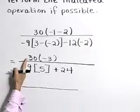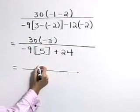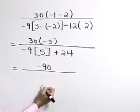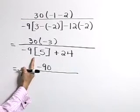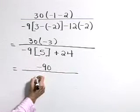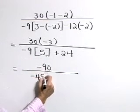Back to the numerator, 30 times a negative 3 is a negative 90. And in the denominator, negative 9 times 5 is a negative 45.